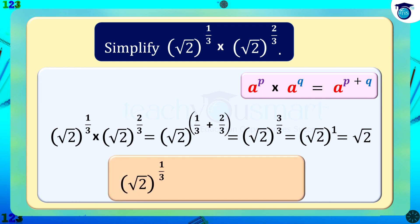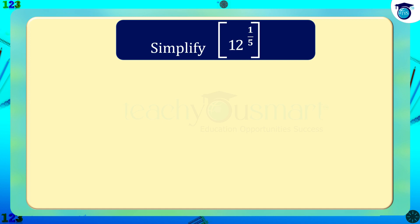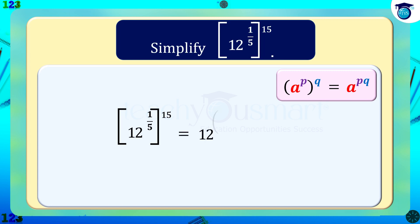Therefore, root 2 whole raised to 1 by 3 multiplied by root 2 whole raised to 2 by 3 equals root 2. Second, simplify: 12 raised to 1 by 5 whole raised to 15. We know that a raised to p whole raised to q equals a raised to pq. So, 12 raised to 1 by 5 whole raised to 15 equals 12 raised to 15 by 5, equals 12 raised to 3.